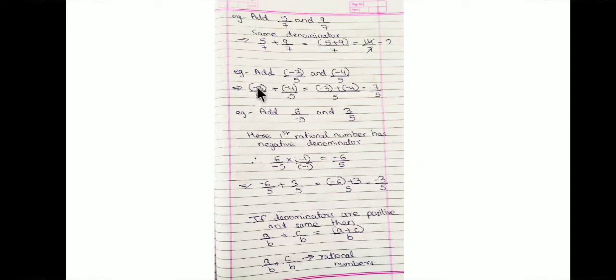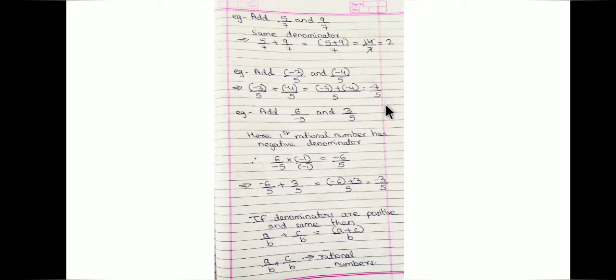We will add the numerator part: (minus 3) plus (minus 4) over the common denominator 5. We get the value as minus 7/5. So minus 7/5 is the required rational number.